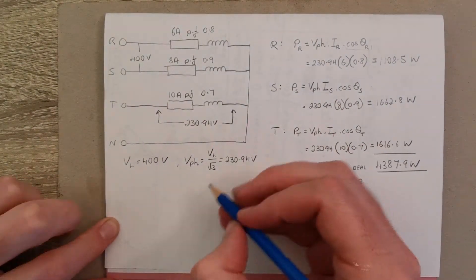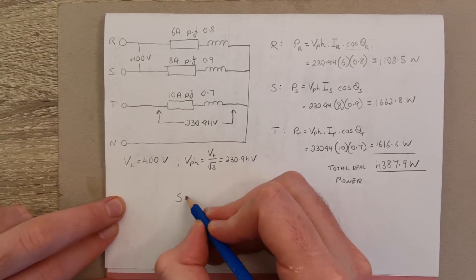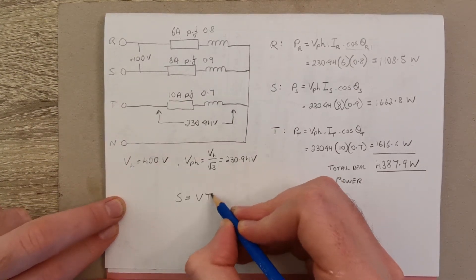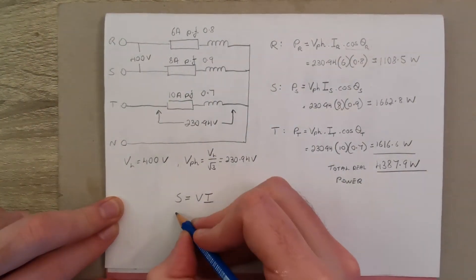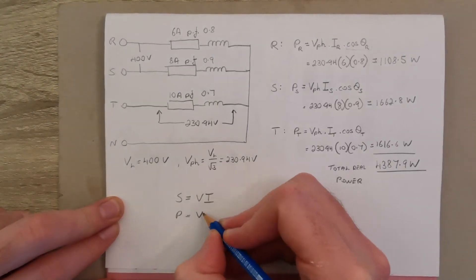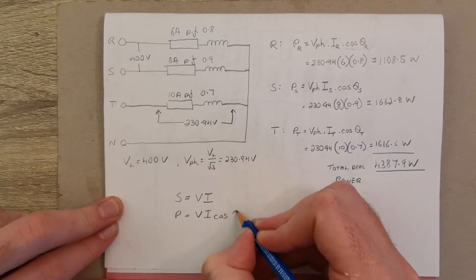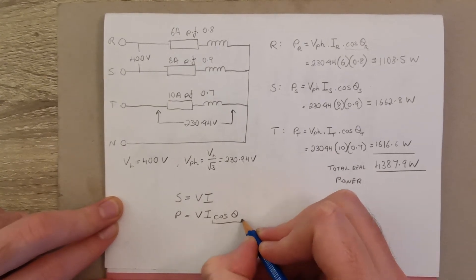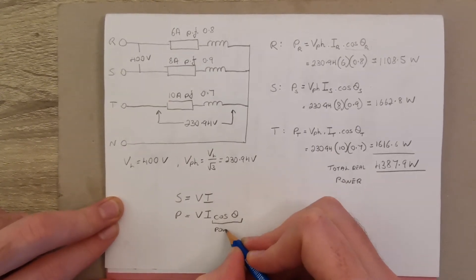Just to recall, remember apparent power is V by I, and our real power is V by I times cosine of theta, where this value here is the power factor.